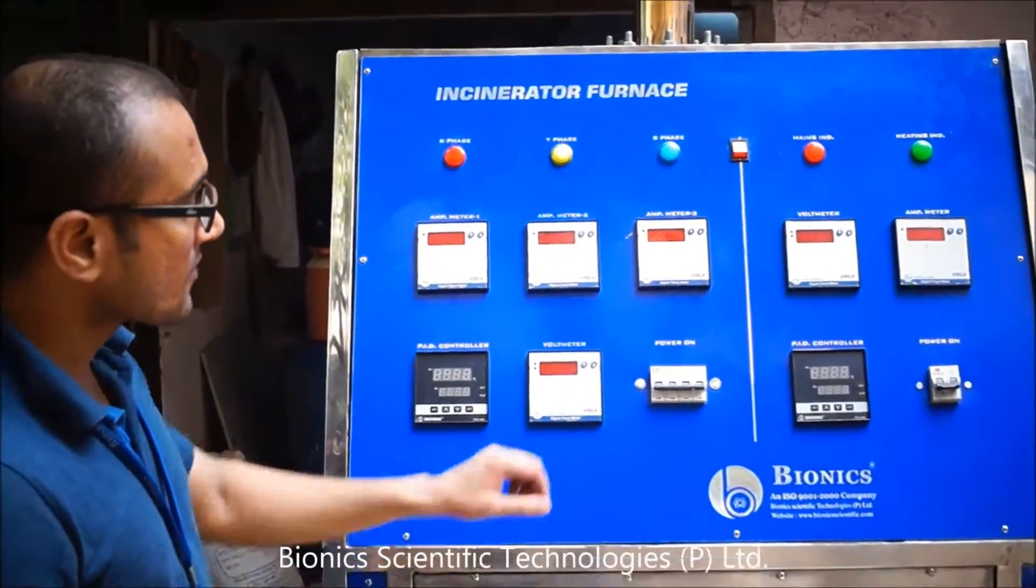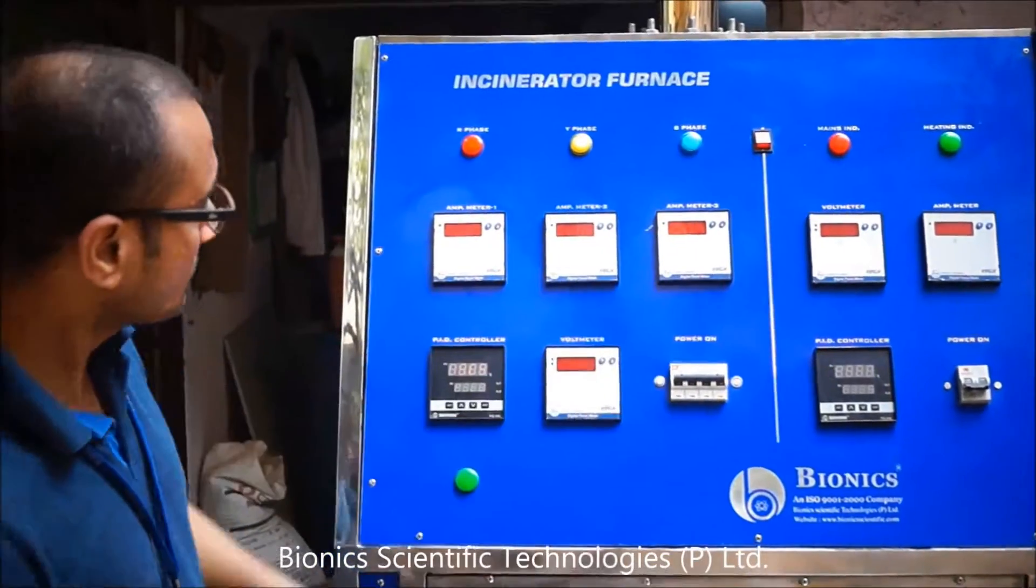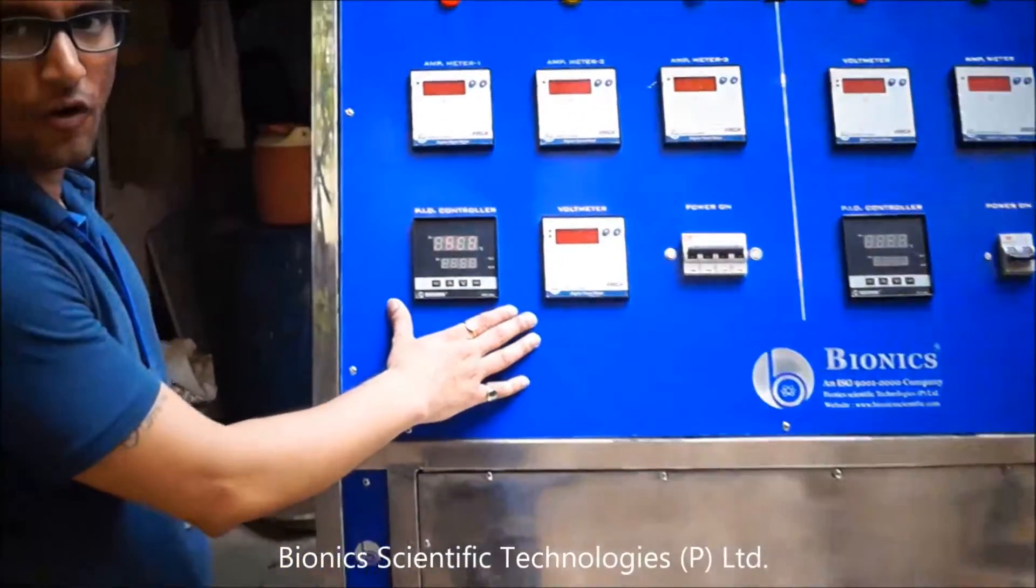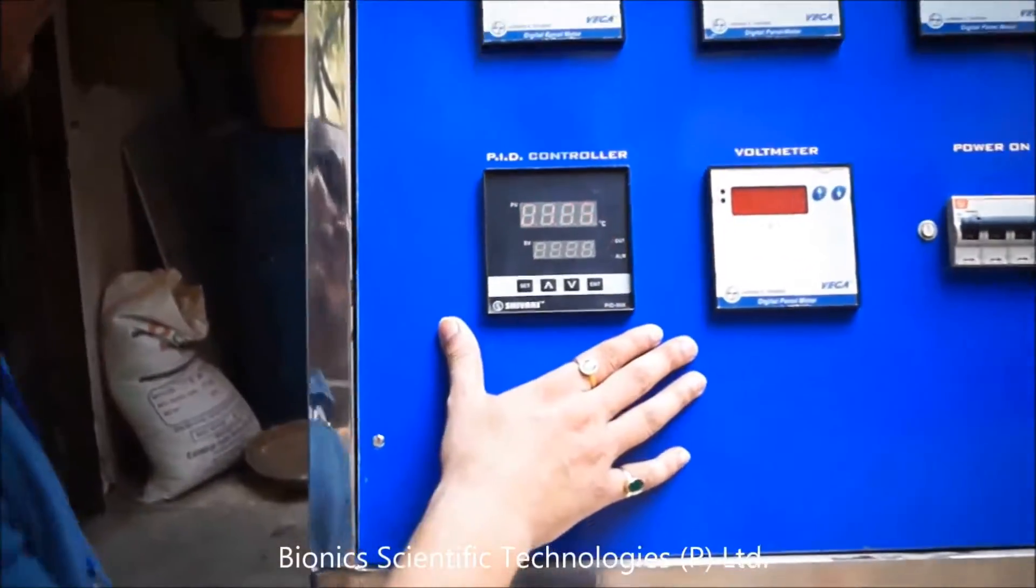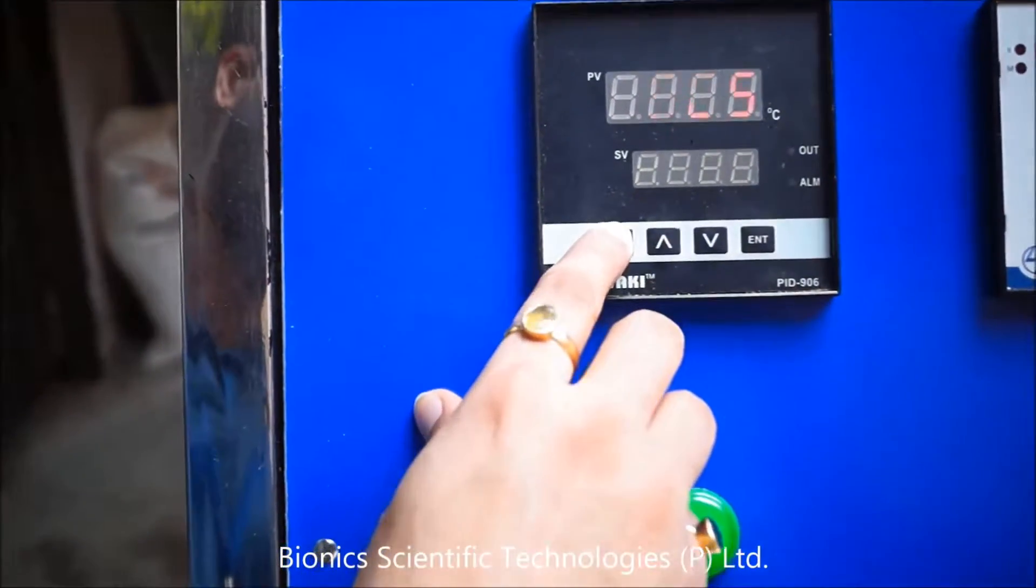Now I show you how to operate this incinerator. Just switch on the mains MCB. Use this PID controller for temperature settings. You can see a set point. Press this button set.